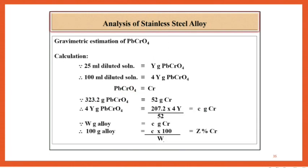Calculations: 25 ml diluted solution corresponds to y gram PbCrO4. 100 ml diluted solution corresponds to 4y gram PbCrO4. PbCrO4 corresponds to Cr. 323.2 gram PbCrO4 corresponds to 52 gram Cr. Therefore, 4y gram PbCrO4 corresponds to (207.2 × 4y) / 323.2, which equals C gram Cr.